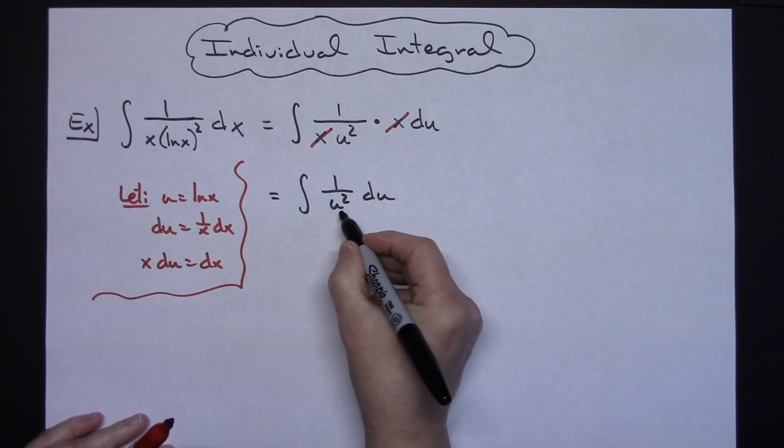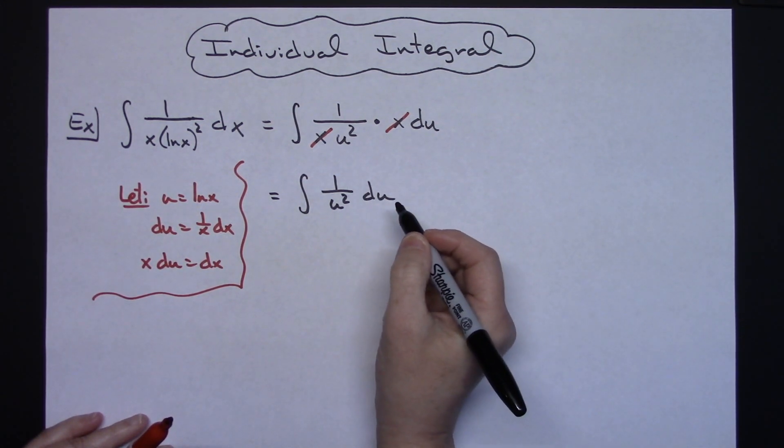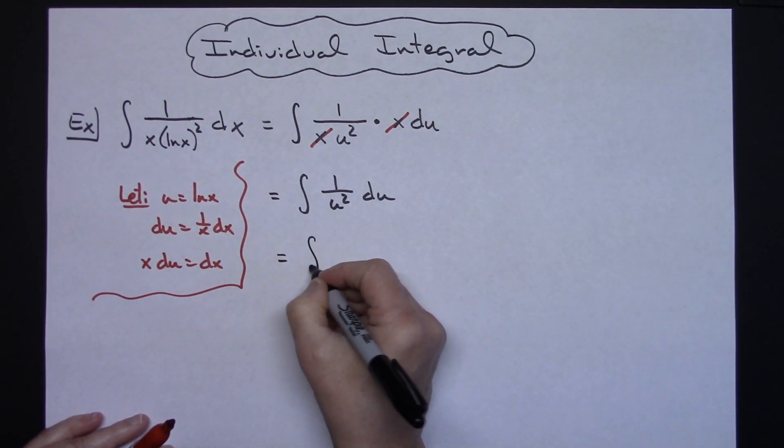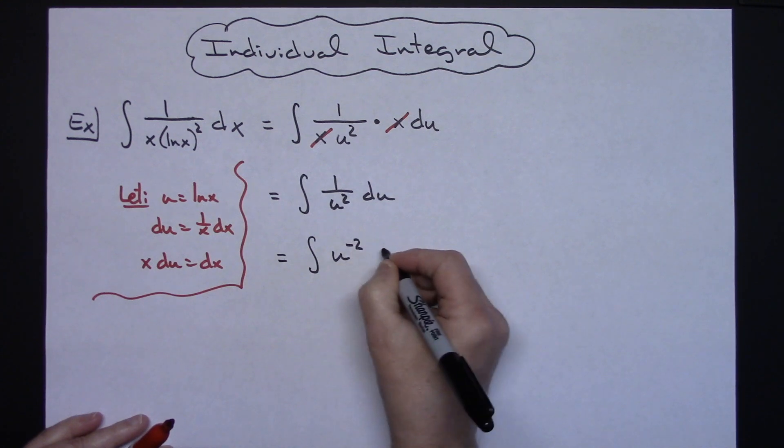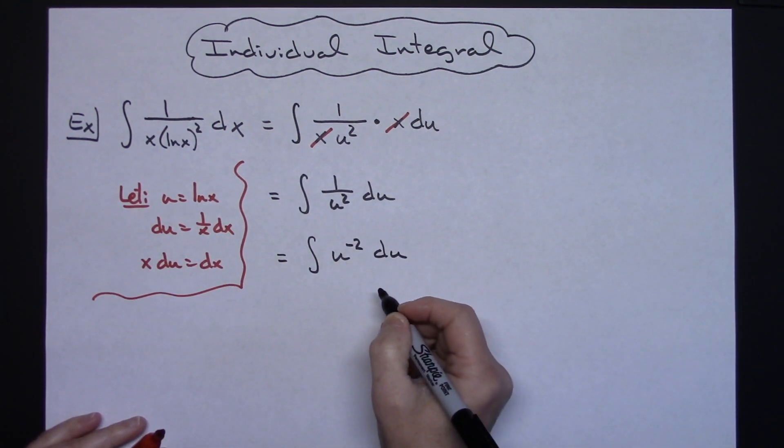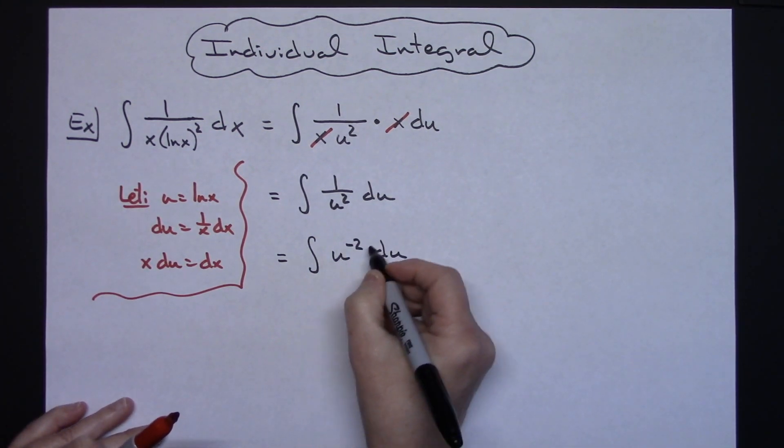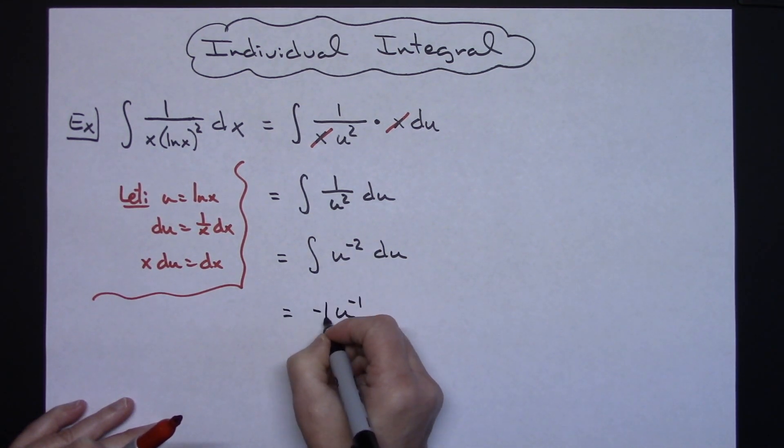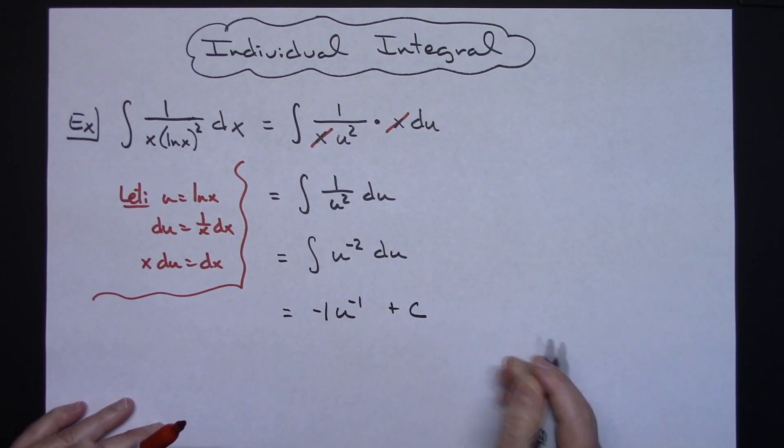We're going to want to move the u squared up to the numerator and make it a negative 2 by using our laws of exponents. So then we'll have the integral of u to the negative 2 du and now we can integrate this one relatively simply by adding 1. That's going to give me a negative 1, so I'll have u to the negative 1 and in front also a negative 1 and we can go ahead and throw in that plus c.